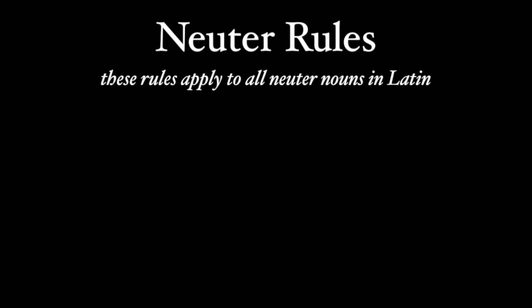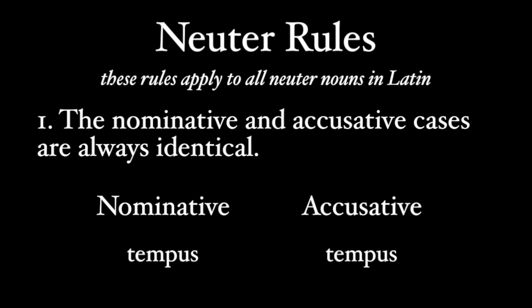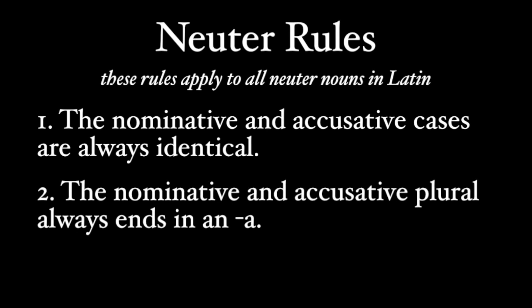Before we get to the endings, keep in mind two specific rules about neuter nouns — not just neuters in the third declension, but all neuters in all declensions. Rule number one: the nominative and accusative are always identical. So for a third declension noun like tempus, since the nominative singular is tempus, the accusative singular is also tempus. Rule number two: the nominative and accusative plural is always -a. So for tempus, the nominative and accusative plural is tempora. Notice that rule two doesn't violate rule one — the plural nominative and accusative are still identical.